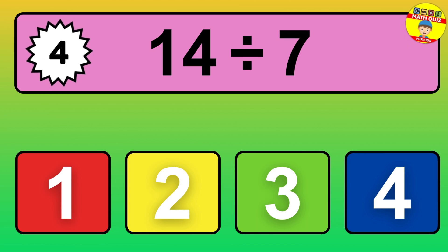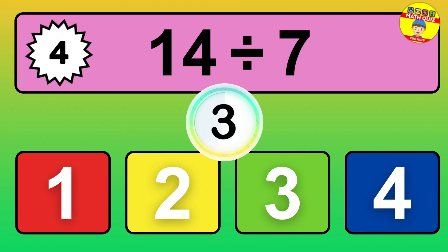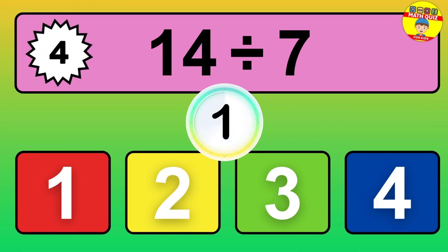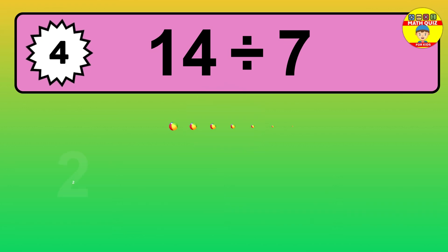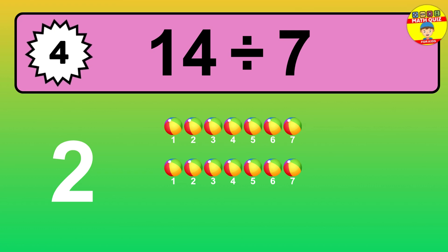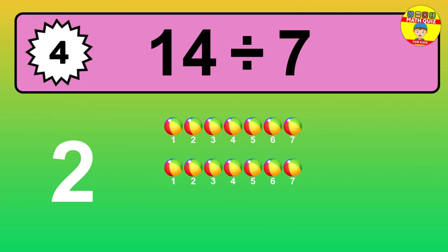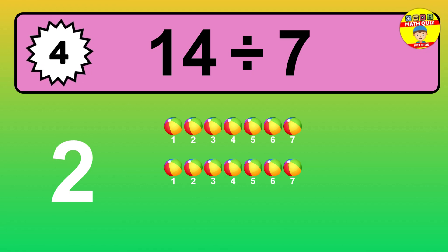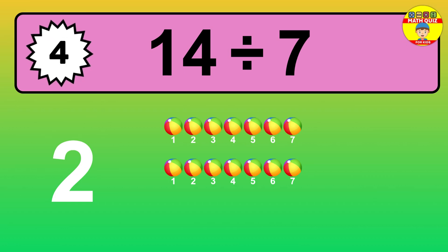14 divided by 7 — time to think! Let's go to the solution. Divide the number 14 by 7. Each group contains 7 units, so dividing 14 by 7 results in 2 equal groups. Thus, the result is 14 divided by 7 equals 2.